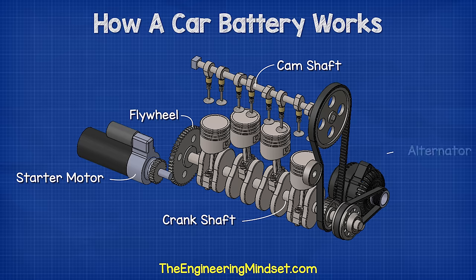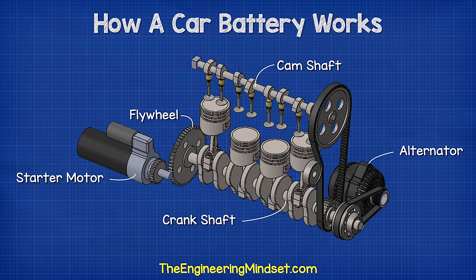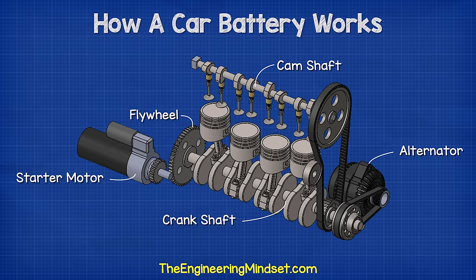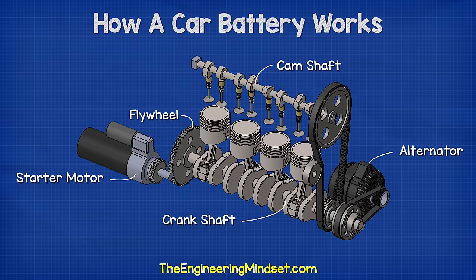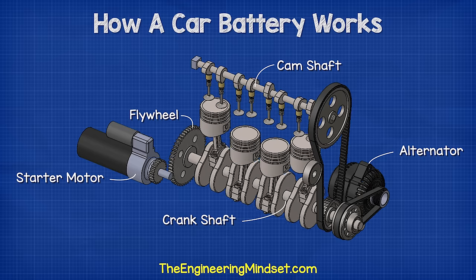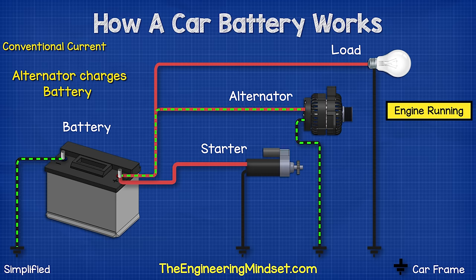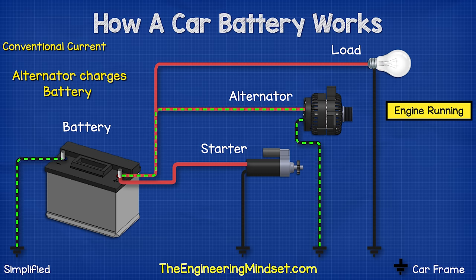Connected to the engine is an alternator. The alternator is rotated by the engine and as it rotates it generates electricity. This electricity is fed back into the battery to recharge it. While the engine is running, the alternator recharges the battery but also provides electrical power for things such as lighting and the music system.